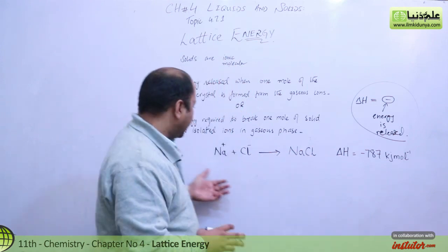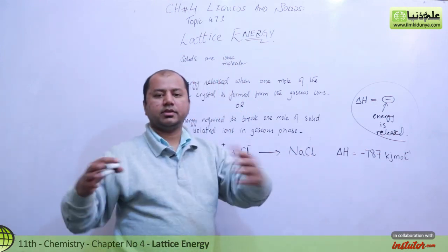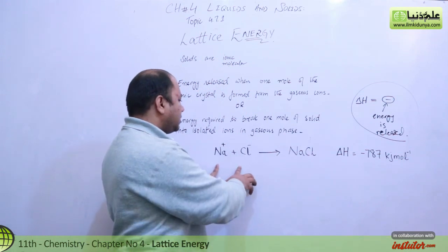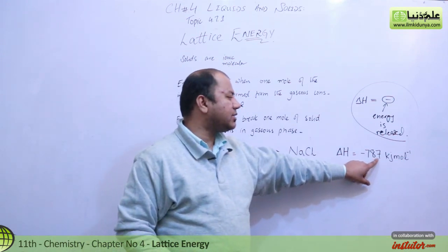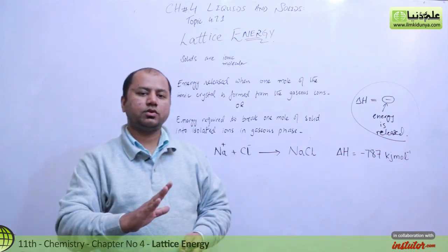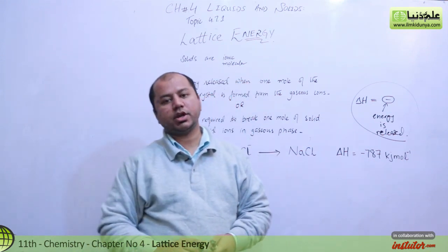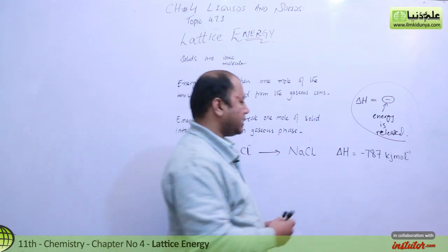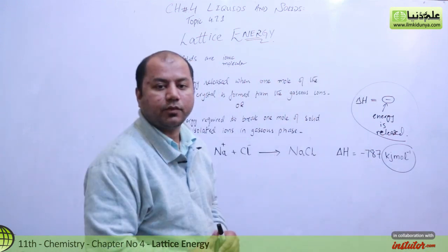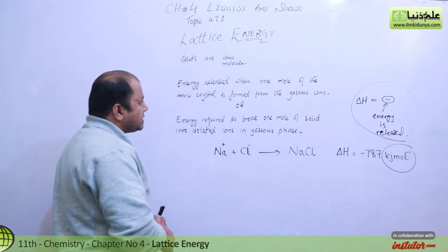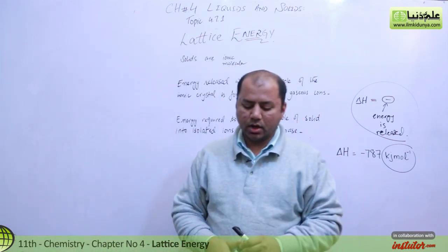For example, sodium and chloride ions come together and release negative 787 kilojoules per mole. Remember: kilojoules per mole is the unit for energy.